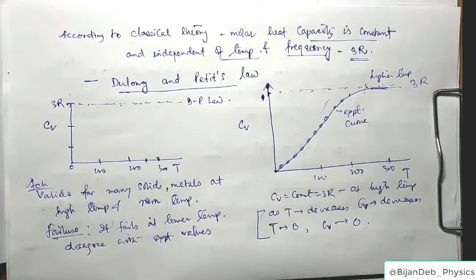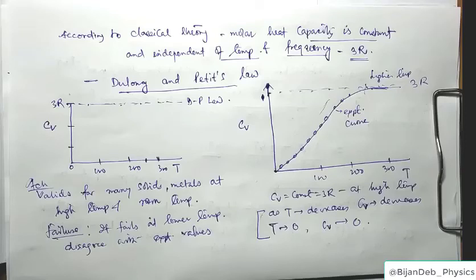In summary, the classical theory of specific heat uses the equipartition theorem: with 3N total degrees of freedom, each contributing kT (½kT kinetic + ½kT potential), the total energy is 3NkT = 3RT, giving a constant molar specific heat of 3R. This is the Dulong-Petit law, which agrees with experiment only at higher temperatures.